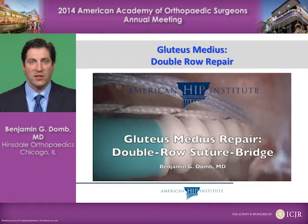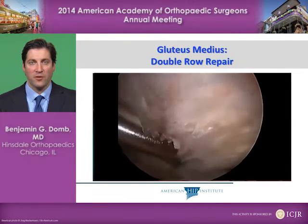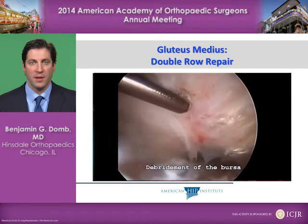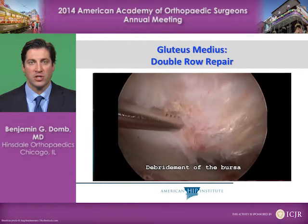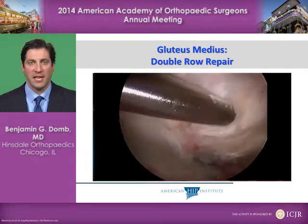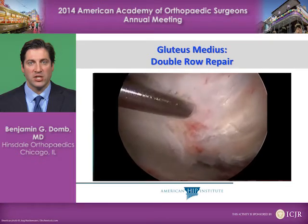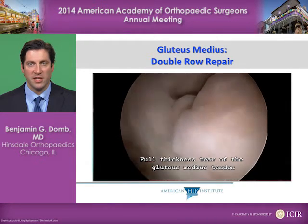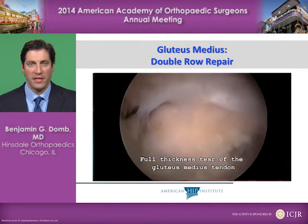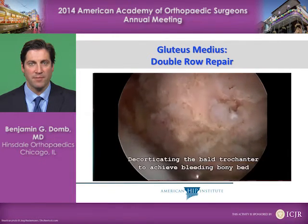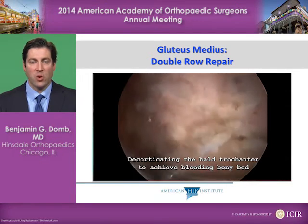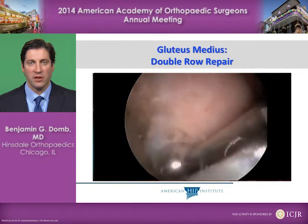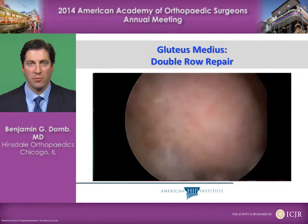A very different entity is the full thickness tear of the gluteus medius. For this particular entity, we'll begin with a debridement of the bursa once again. After we've debrided the bursa, we'll expose a very large tear in this case with a retraction of the tendon away from the bone. This is essentially a bald greater trochanter. You can visualize the tendon, and as we retract it, we see that the entire greater trochanter is bald, with enthesophytes from the chronicity of the tear on the trochanteric tip. We'll decorticate the greater trochanter to achieve a bleeding bed of bone, and note that the footprint of the insertion of the gluteus medius is very large.